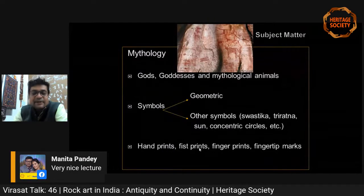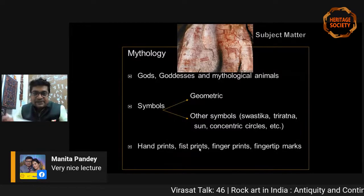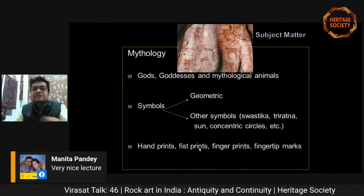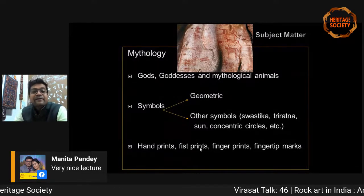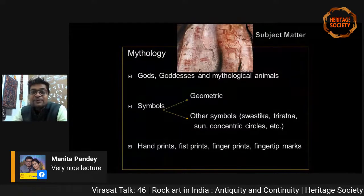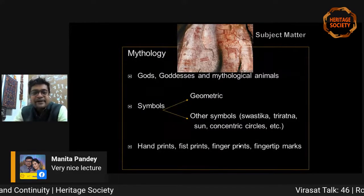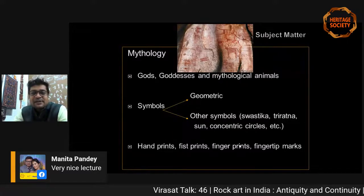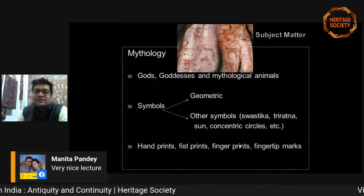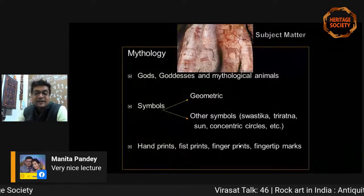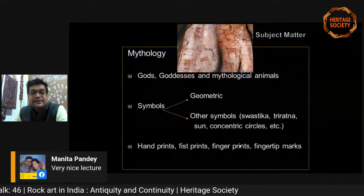Sometimes mythological depictions also appear — gods, goddesses, and mythological animals. Sometimes we question whether such animals really existed, as paleontological and zoological studies have never confirmed their identity. But such animals can be found in rock art regardless of exaggeration or artistic style. Among symbols, many are geometric; others include the swastika, triratna, sun, etc. Apart from these, ancient artists also left their hand prints, fist prints, finger prints, fingertip marks, etc., found inside rock shelters.